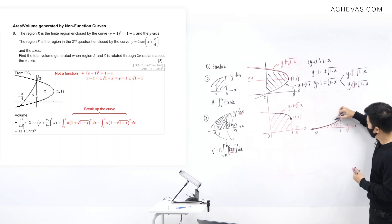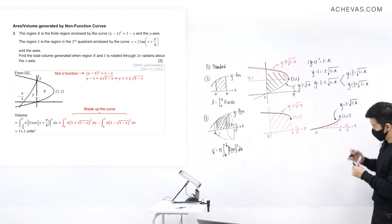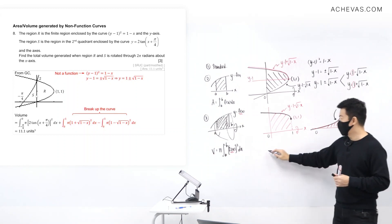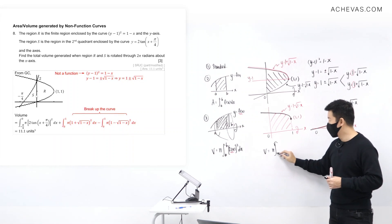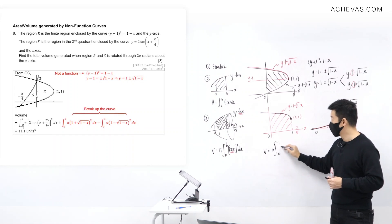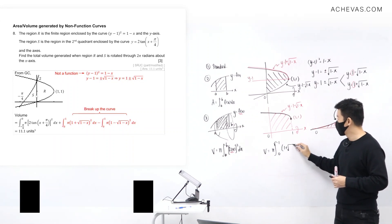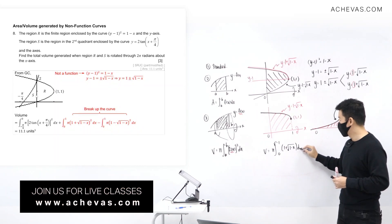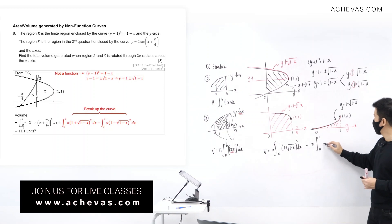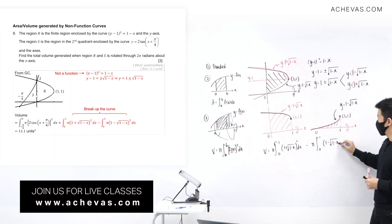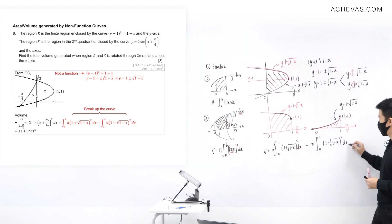So the volume is: π times the integral from 0 to 1 of [1 + √(1-x)]² dx, minus π times the integral from 0 to 1 of [1 - √(1-x)]² dx. Taking this region rotated about the x-axis and subtracting the other makes it very straightforward to compute.